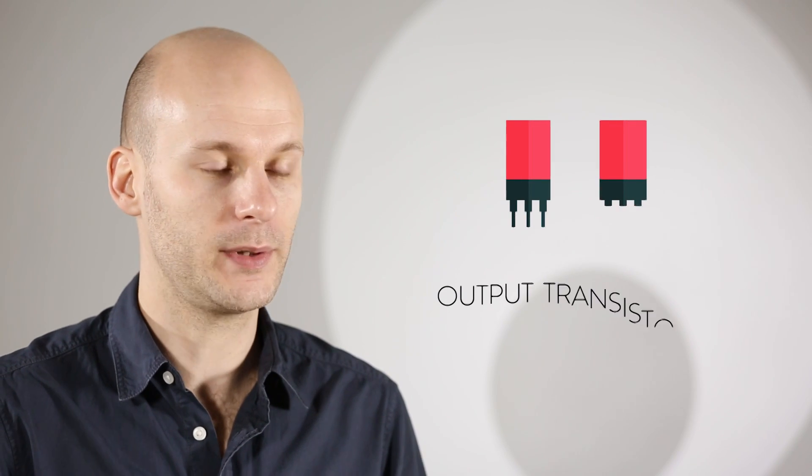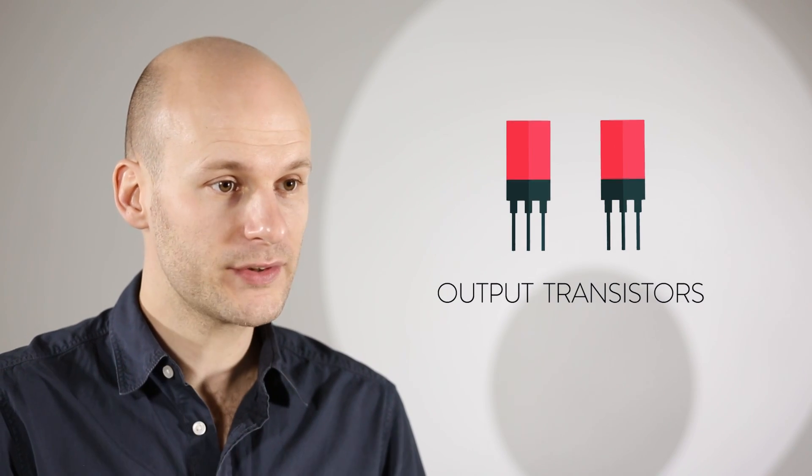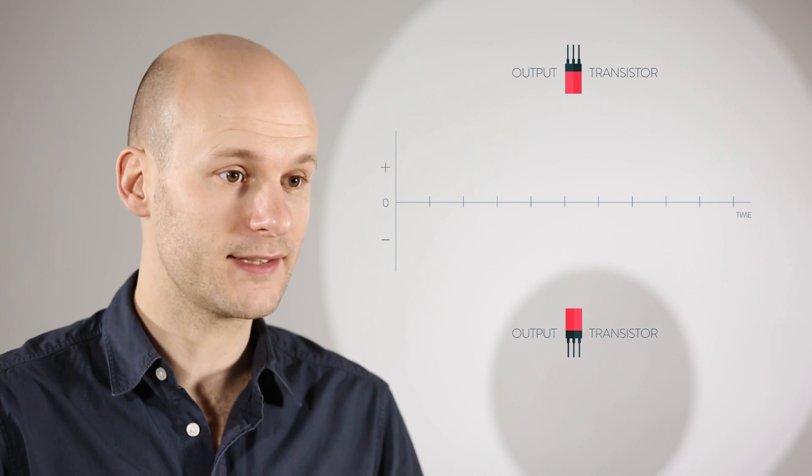A power amplifier is essentially a push-pull device. It creates the backwards-forward signal or waveform that's needed to drive the speakers. In Class B and Class AB amplifiers, this backwards-forwards waveform is created by a pair of output transistors, one in the positive domain and one in the negative.